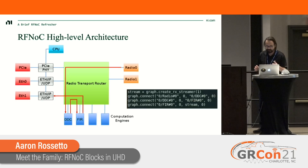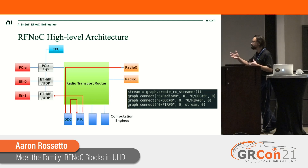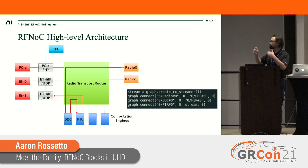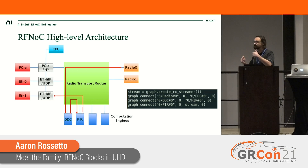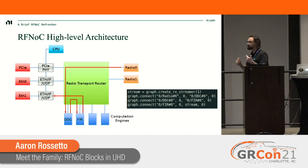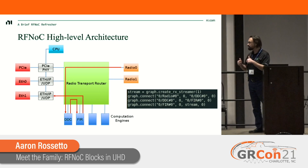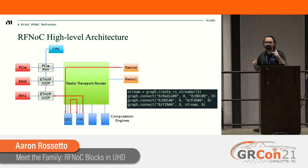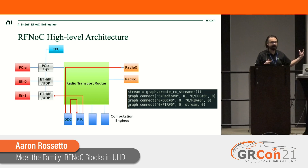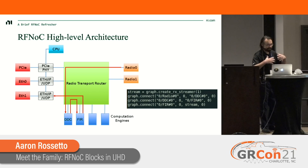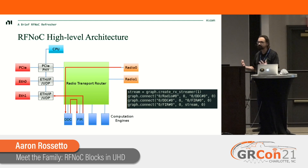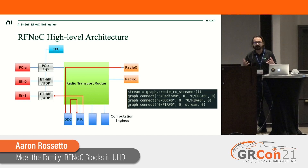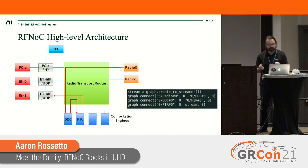There may be cases where you can get by with some of the simpler, more common algorithms built into UHD. For example, I have code here that creates a flow graph where the radio element is connected to a digital down converter, which connects to an FIR filter, and then the output goes to a stream endpoint so data can be sent back to the host.